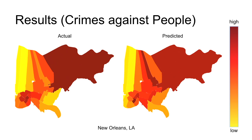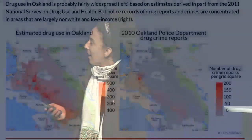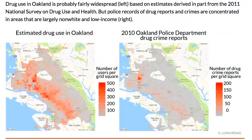But as time went on, I started seeing some issues with this kind of work. Some of you might guess what I'm about to say. Here you can see estimated drug use in Oakland on the left, which is pretty spread out.